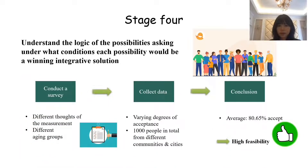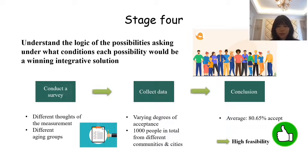The second step is to understand the logic of these possibilities, asking under what conditions each will be a winning integrative solution. We conducted a survey in 200 communities from four different cities in China. After collecting the data, we found that about 80.65% of residents could accept such a scheme — they understood the purpose and benefits of propaganda videos and could accept a fine of $40 — meaning our program has high feasibility. The government also attaches great importance to this program and will further design attractive promotional advertising.